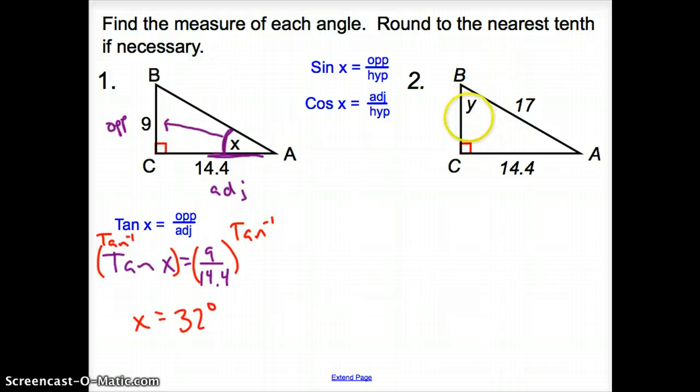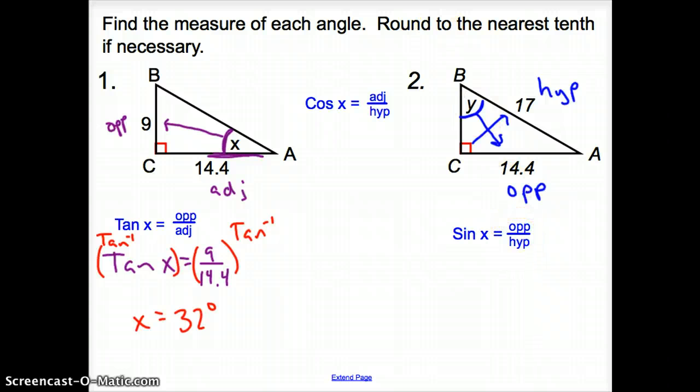On to 2. Again, start with what you have. We are looking for y. From y, what sides do we have? We have the opposite, and then we also have the side across from the 90 degree angle, making this side the hypotenuse. Well, what trig function deals with the opposite and the hypotenuse? That is going to be sine.